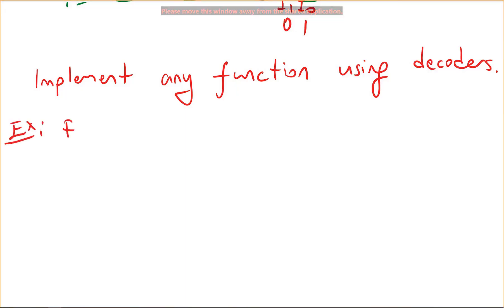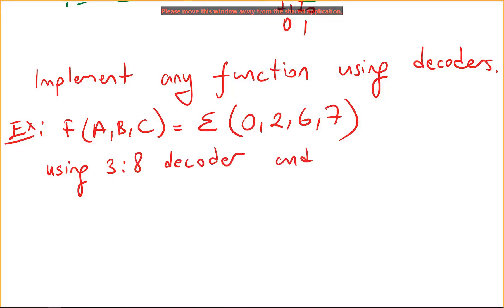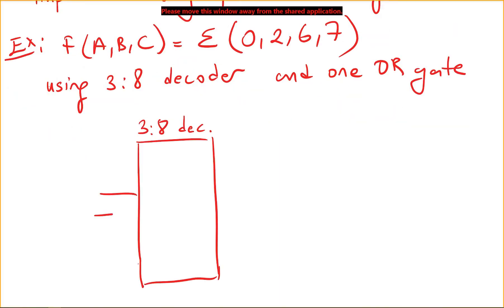Let's say I am given a function of three variables a, b, c with minterms zero, two, six, and seven. We need to implement this function using a three-to-eight decoder and one OR gate. So let's draw our three-to-eight decoder — we have three inputs and eight outputs.